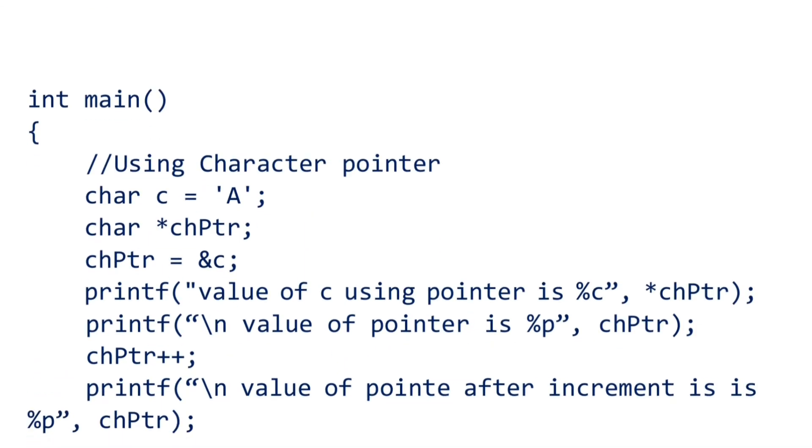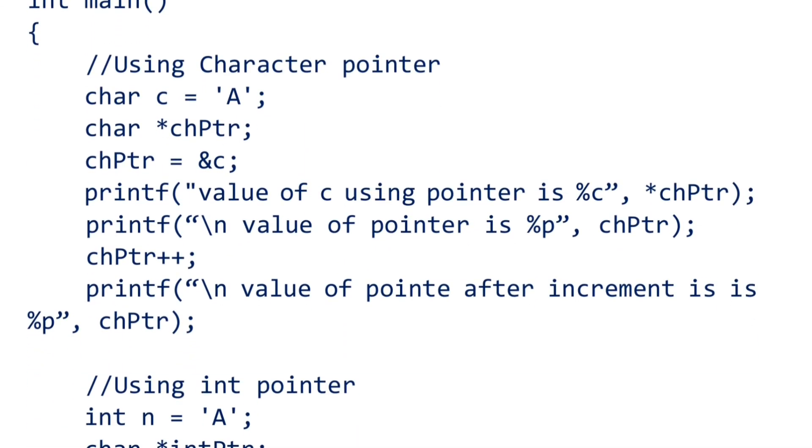At first we have declared a character and we also declared a character pointer. After that we initialize that character pointer as the address of variable c. First we display the value of pointer without incrementing, after that we increase the value by one and we display the address after the increment.